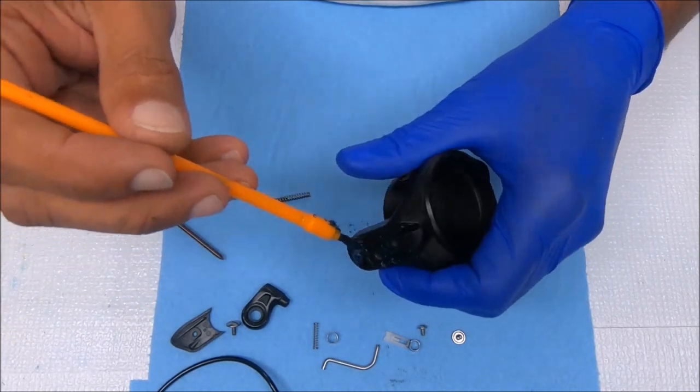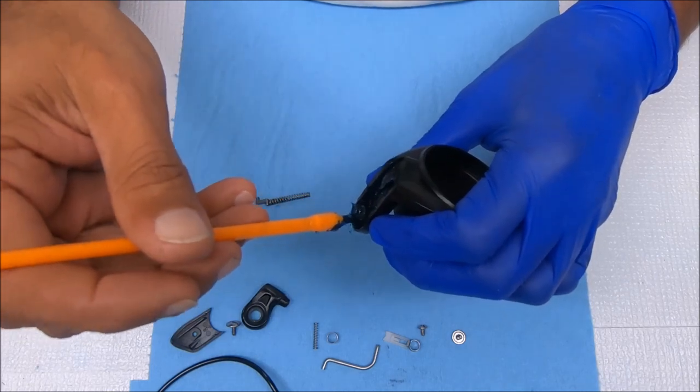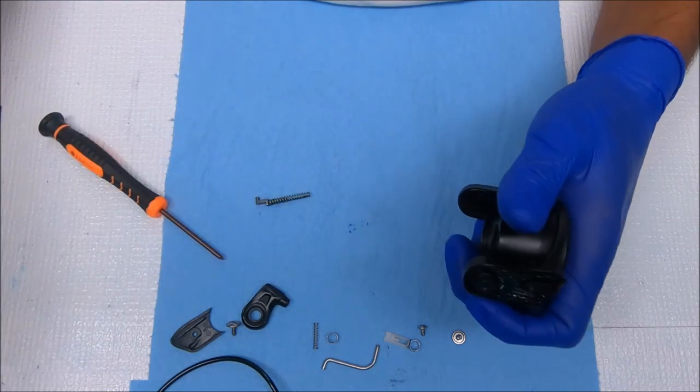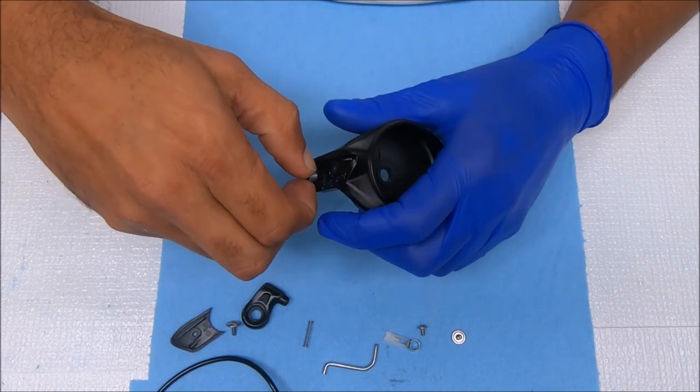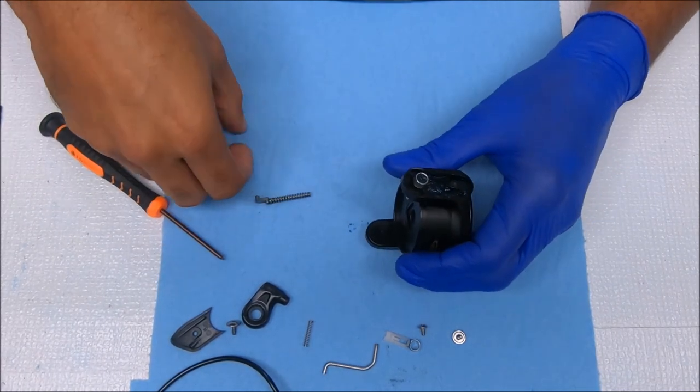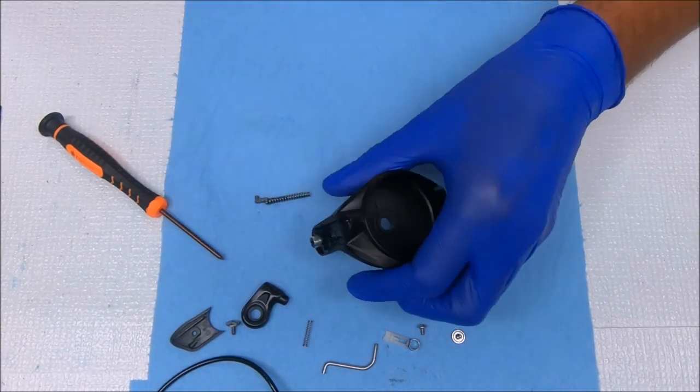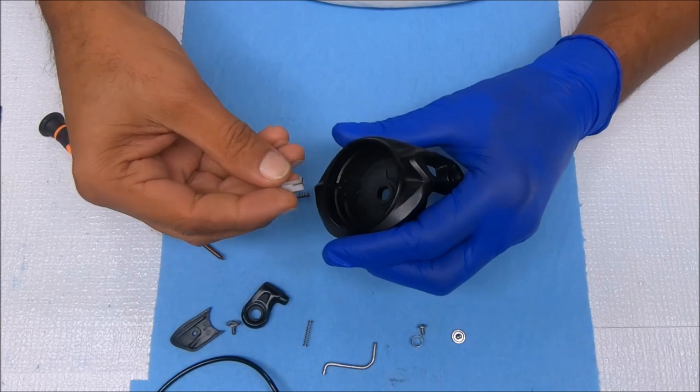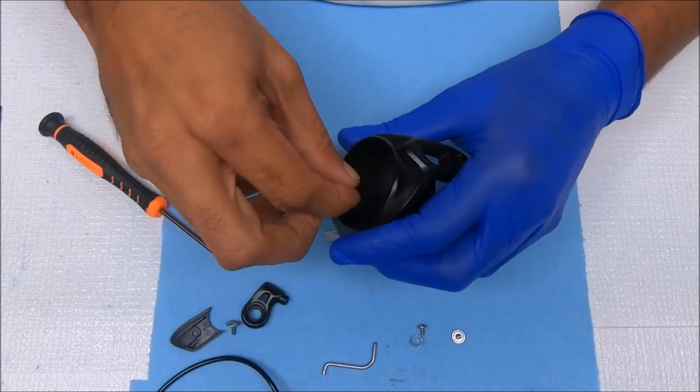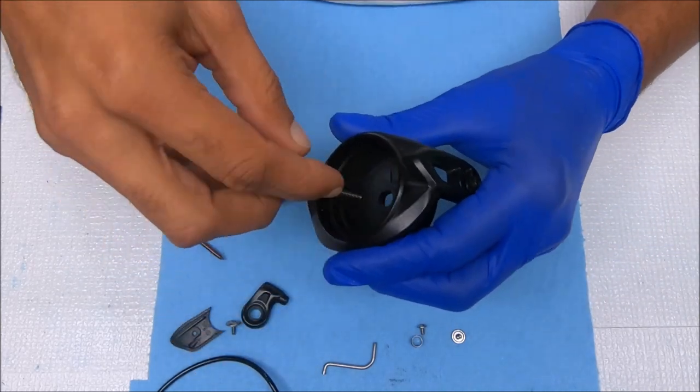Now we can grease around here and put on our metal bushing. Now here comes the tricky part. You have to take this spring and drop it onto that slot right there like that.